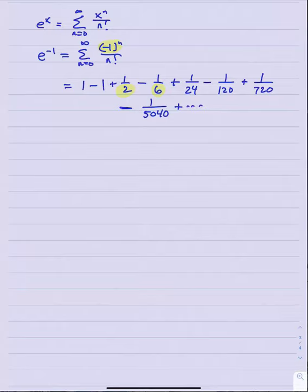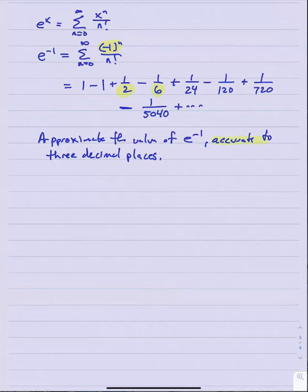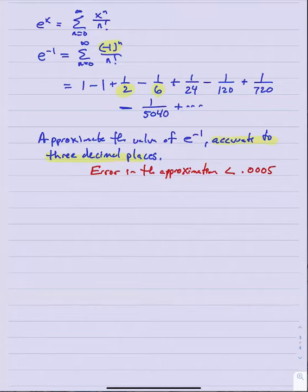Suppose I asked you to use this power series to approximate e to the minus one accurate to three decimal places. Recall that when I say accurate to three decimal places, that's code for wanting the error in the approximation to be less than 0.0005, and that has to do with rounding. I know that to be accurate to three decimal places, I have to look at what's happening in that fourth decimal place.